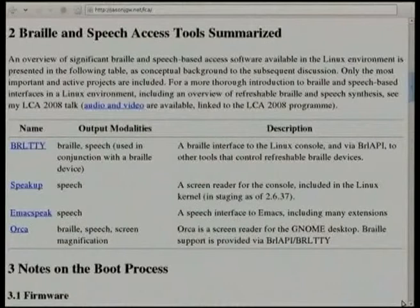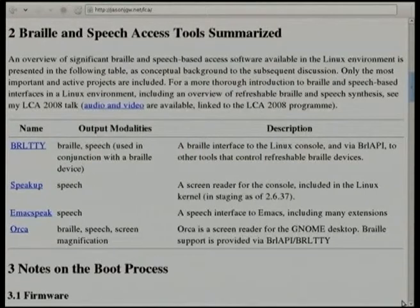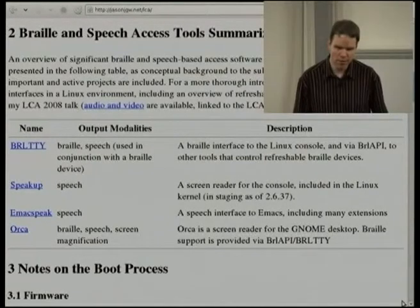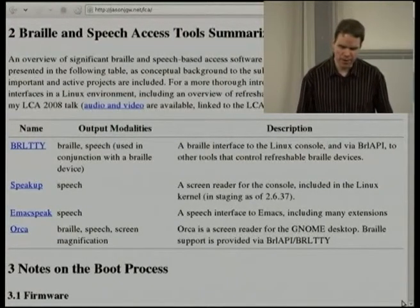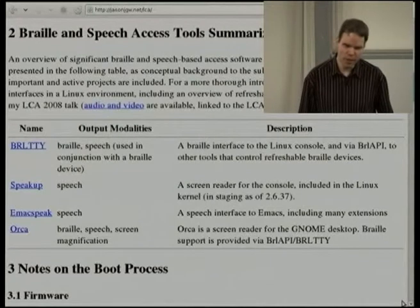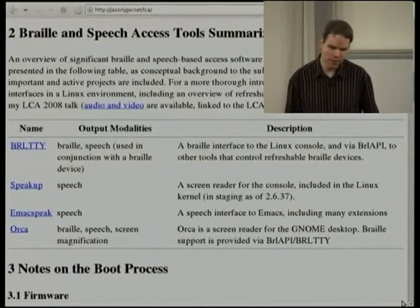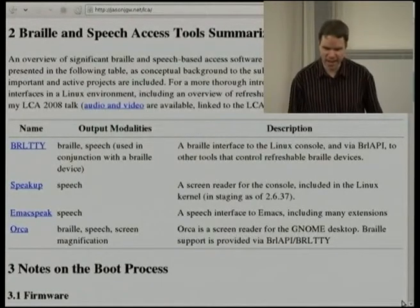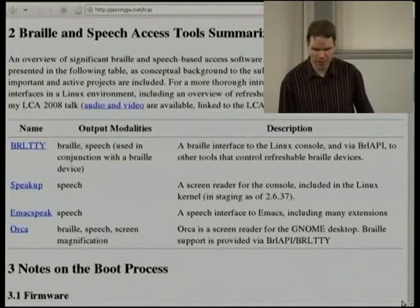Finally, there's the most complex project of all, Orca, which is a screen reader for graphical desktop environments under the X Windows system. It's a GNOME project, so it provides access to GNOME itself, but it also offers access to various X applications. Orca is written in Python and uses the GNOME accessibility API to interact with the desktop environment and applications. Scripts in Orca receive events from the accessibility API and construct a braille and speech interface based on those events, essentially tracking focus and reading the current item as the user navigates the graphical desktop.